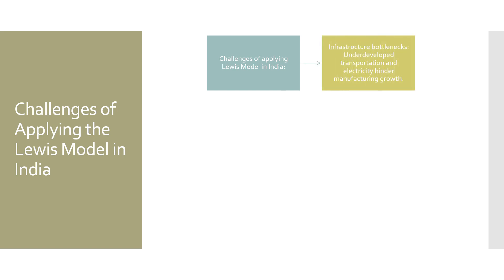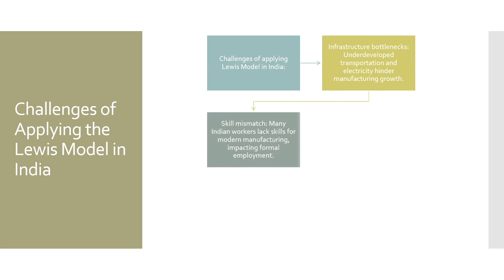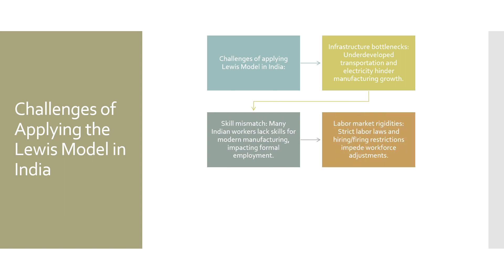Infrastructure Bottlenecks: India's infrastructure, particularly in transportation and electricity, is underdeveloped, which hampers the growth of manufacturing industries. Skill Mismatch: many Indian workers lack the skills required for the modern manufacturing sector, making it difficult for them to find employment in the formal economy.